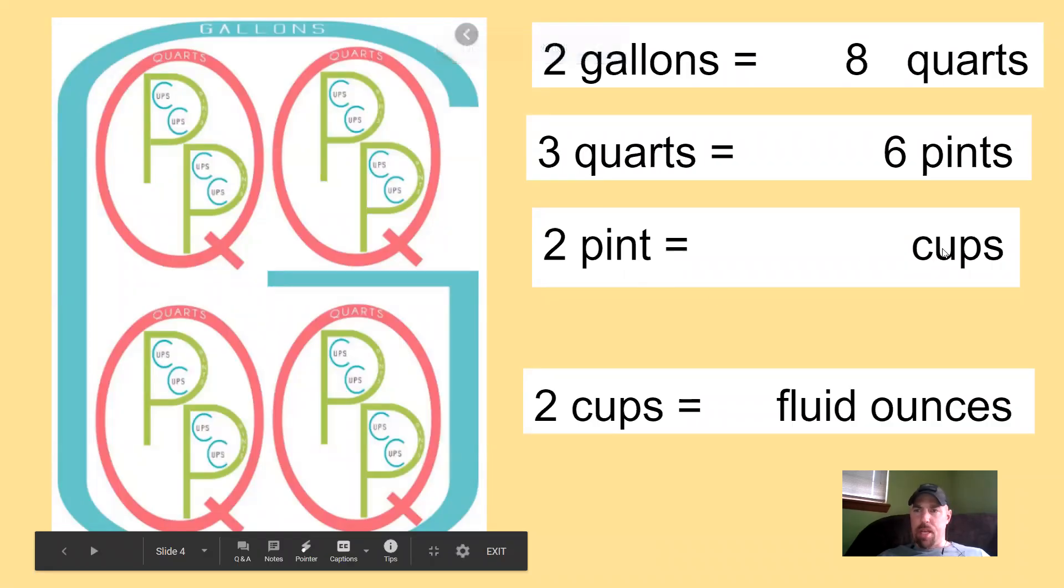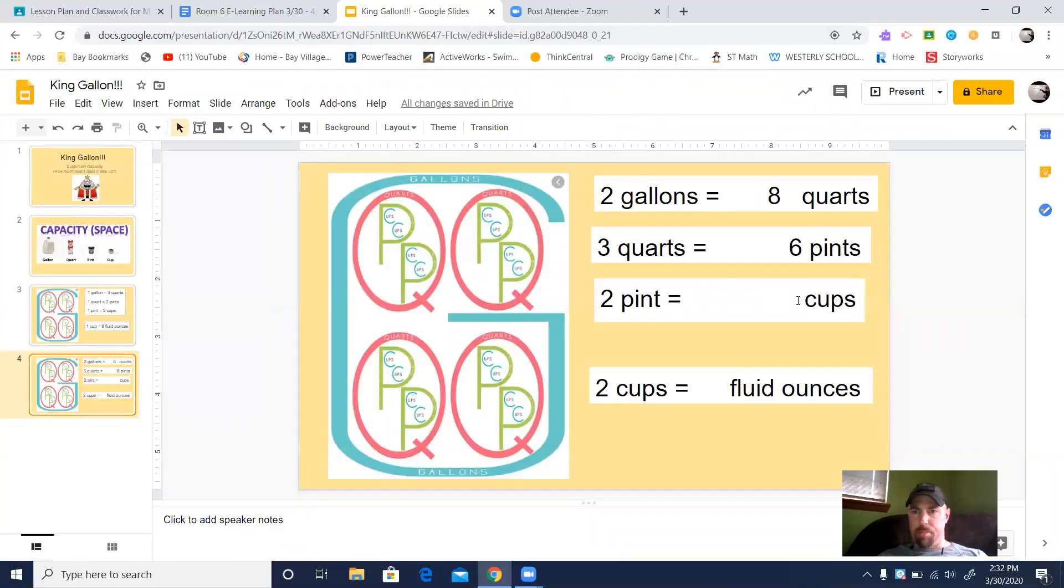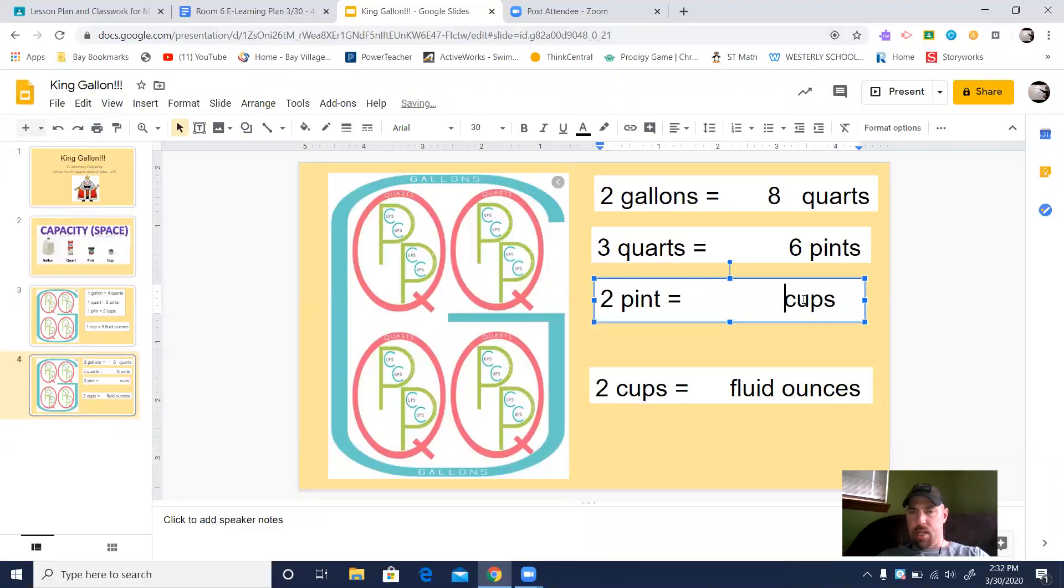Now two pints is going to be how many cups? Well, let me see here. I've got two of these Ps and I'm looking inside the two Ps. It is one, two, three, four cups. So I have four cups inside of my two pints.